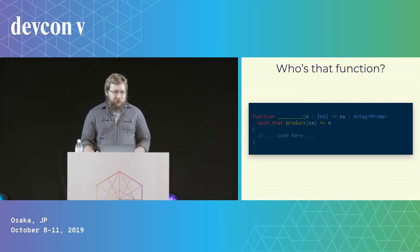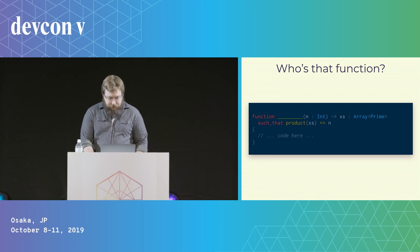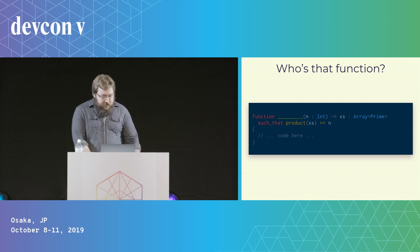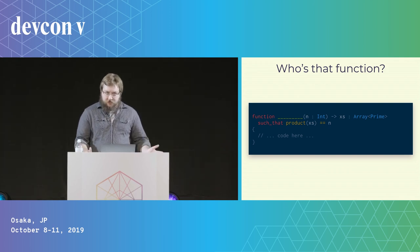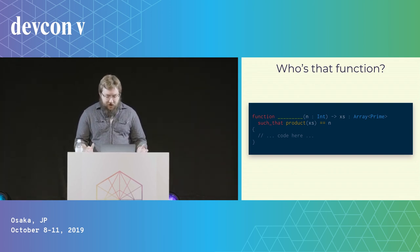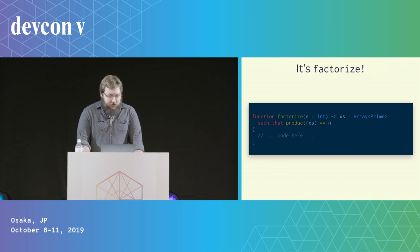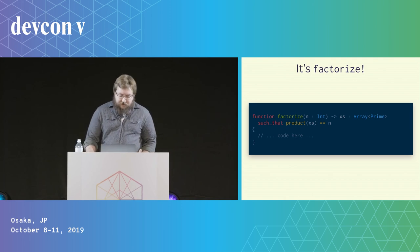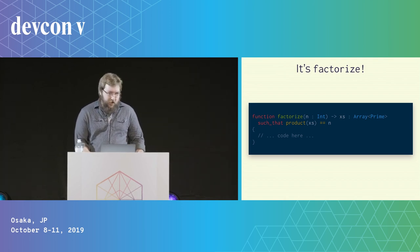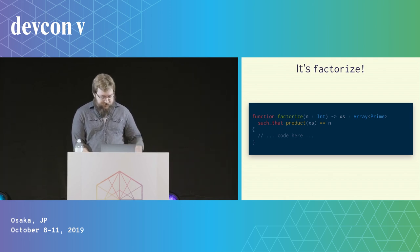Kind of like a game of 'Who's that Pokémon?' but with types. We have a function that receives a number N and returns an array of prime numbers that multiply together to equal N. Can anyone guess what this has to be? It's factorize. The cool thing is nothing other than the correct factorization implementation will pass the type checker. The Fibonacci sequence would be a type error because the products wouldn't sum to the number.